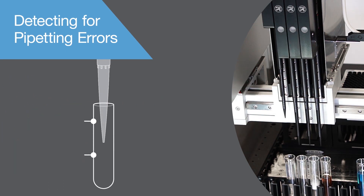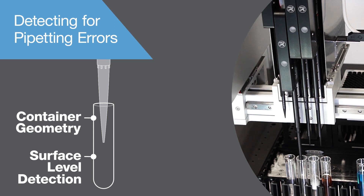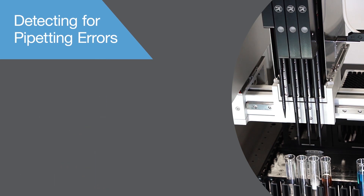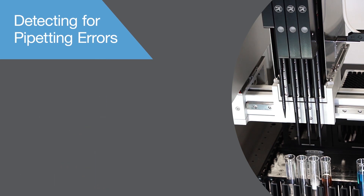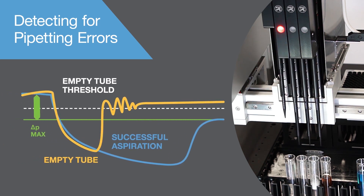ZOOS channels know if a well contains insufficient liquid, based on the liquid surface detection and the container geometry. The channel will alert the control system of this exception. Additionally, if the ZOOS is commanded to pipet from a set height and insufficient liquid is present, the ZOOS channel will detect the aspiration of air by comparing the post-aspiration channel pressure to a preset pressure threshold.